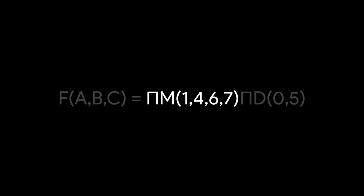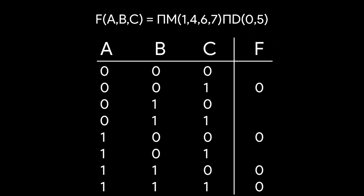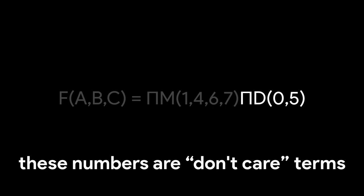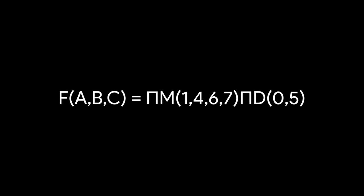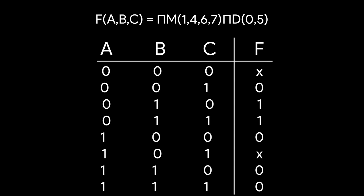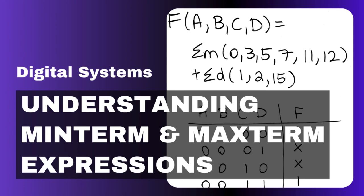Each of the numbers in the max-term parentheses represents max-terms, or rows of the truth table that have an output of 0. Each of the numbers in the don't care parentheses represent don't cares, or rows of the truth table that have unspecified outputs, while other truth table rows are 1. Thanks for taking the time to learn about min-term and max-term expressions. Until next time, stay well.